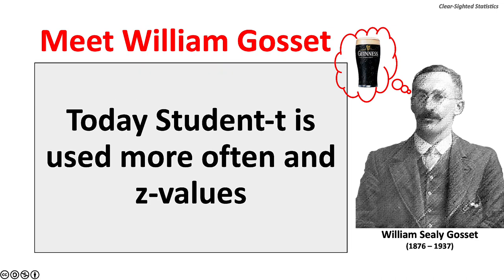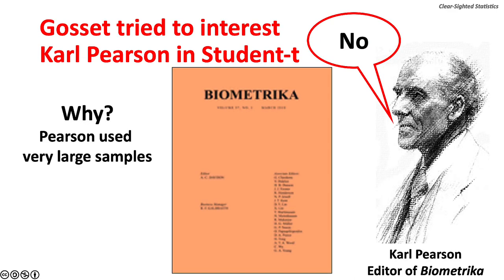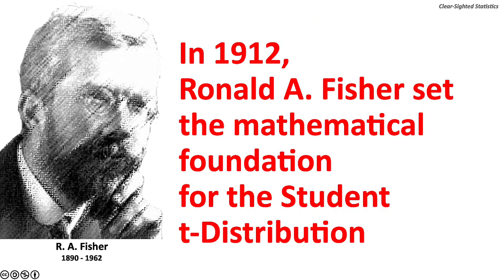Today, Student t is used more often than Z values. In 1906–1907, Gossett had to take leave from Guinness to study at Karl Pearson's laboratory, the Galton Eugenics Laboratory at University College London. Pearson was editor of Biometrics, a journal dedicated to providing statistical support for eugenics and Darwin's theory of evolution. Gossett tried and failed to interest Pearson in Student t, as Pearson used large samples and saw no reason to use it. In 1912, Ronald A. Fisher, a very influential statistician of the first half of the 20th century, set the mathematical foundation for the Student t-distribution.